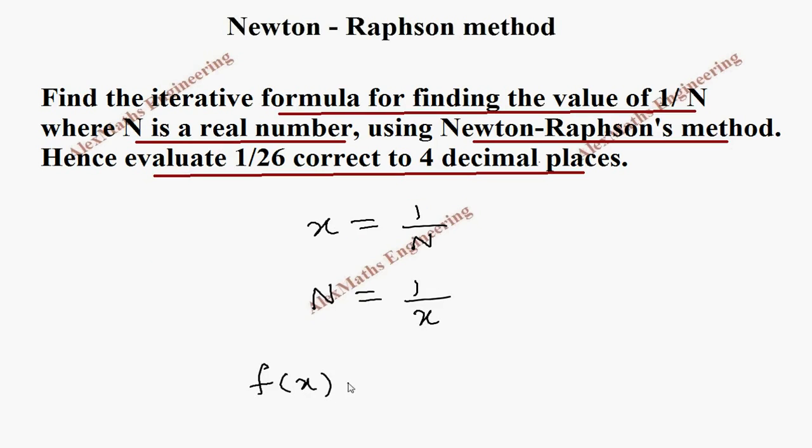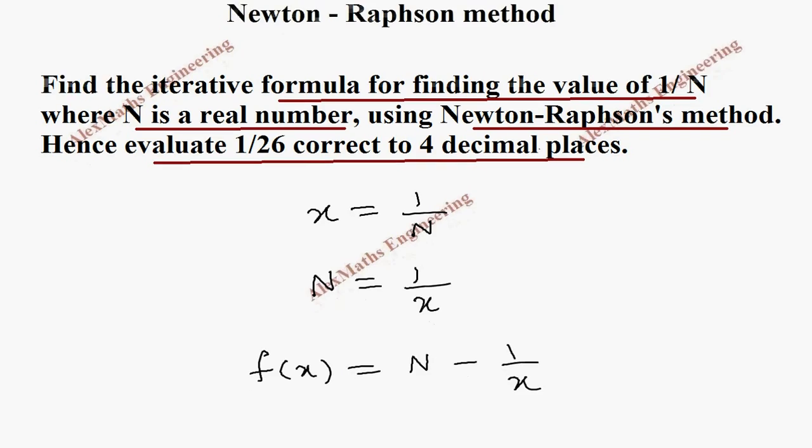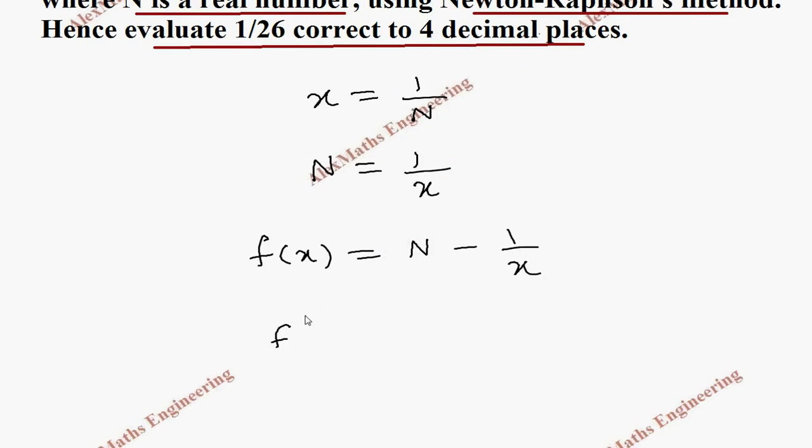Now its derivative, f dash of x: N is a constant which is 0, minus 1 by x is minus 1 by x square, with a negative sign, so it becomes plus 1 by x square.